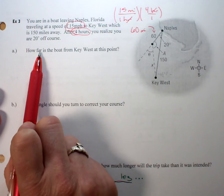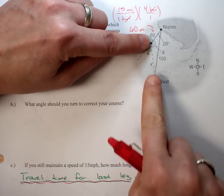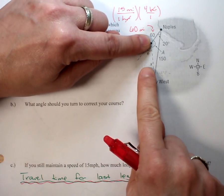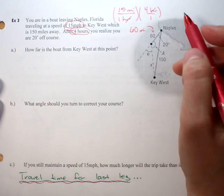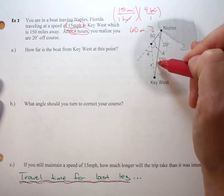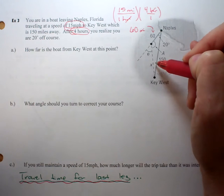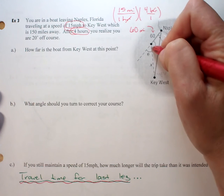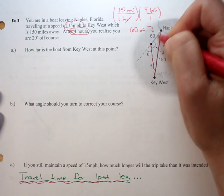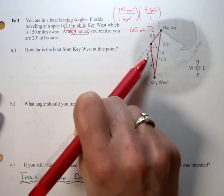The first question asks how far is the boat from Key West. So here's where we realize oops, and here's Key West, so we're solving for X. I'm going to outline this triangle.